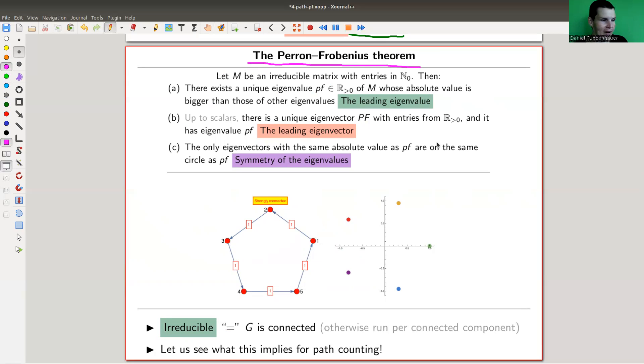It's stated for a matrix, but actually we know by now that a matrix is just a graph. And it's an irreducible matrix, which in terms of graph just means that G is connected, otherwise you would run it per connected component. So here's a statement. You have an irreducible matrix with natural number entries, a graph, then there exists this Perron-Frobenius eigenvalue, the leading eigenvalue, and there's a leading eigenvector.